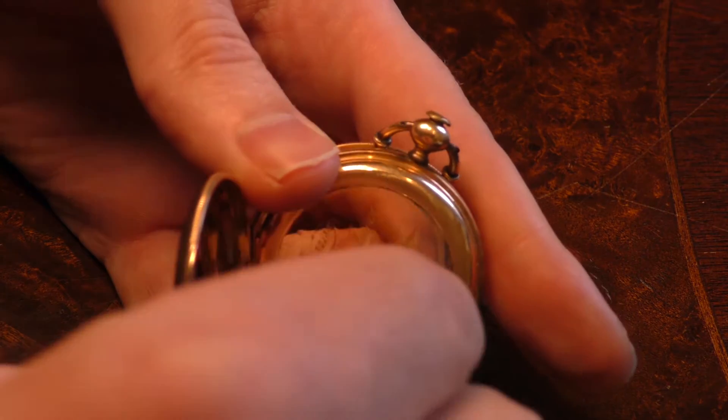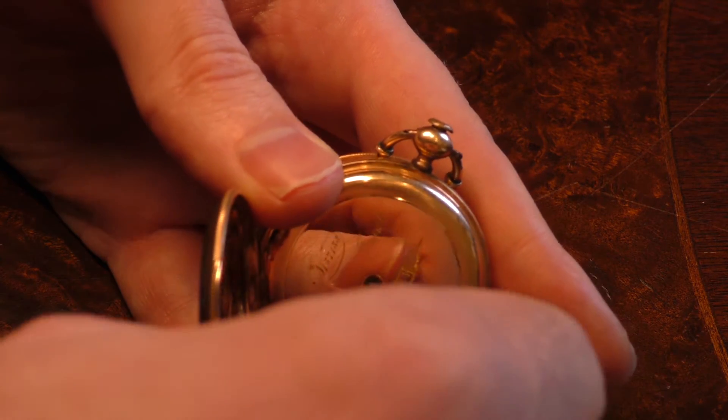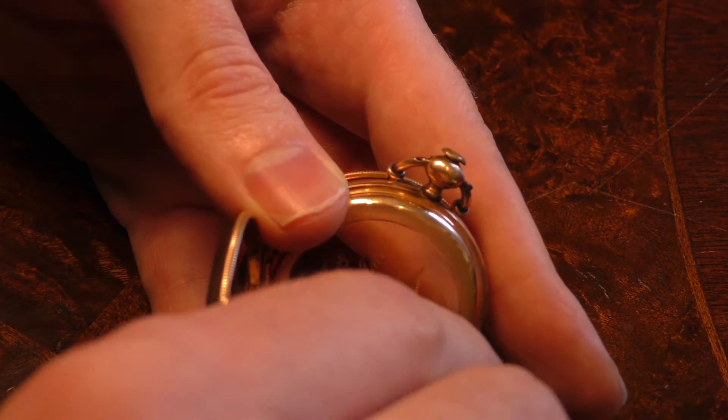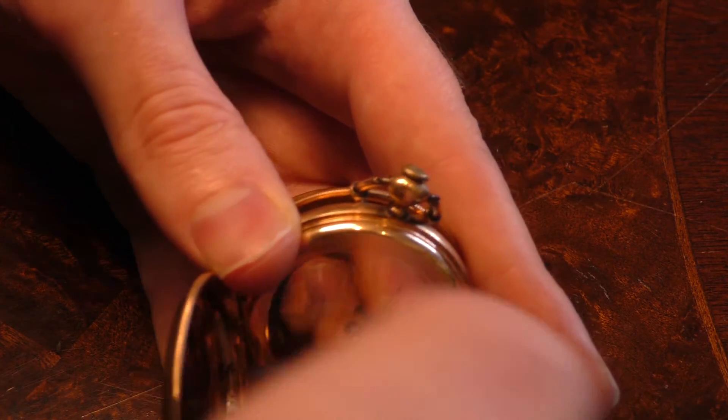What you basically want to do is put the key into the slot and twist it, usually clockwise. Some antique British watches do twist counterclockwise. Go until you feel tension.